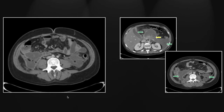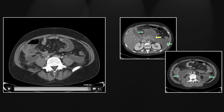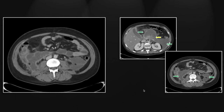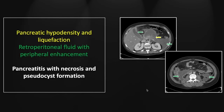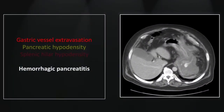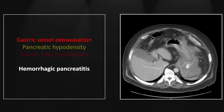Note the right-sided retroperitoneal fluid collection with extensive enhancement in its periphery. I read this as pseudocyst formation with findings suggestive of superimposed infection, so they went to great lengths to sample these fluid collections. Ultimately it did not grow anything. I don't regret my read — peripheral enhancement suggests the presence of infection — but it is good to know that nothing is 100%. Our next case is a hemorrhagic pancreatitis. You can see gastric vessel extravasation here, most likely a branch of the left gastric artery, bleeding into the wall of the stomach itself.